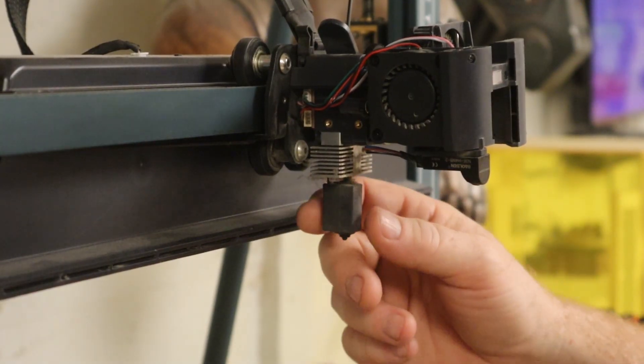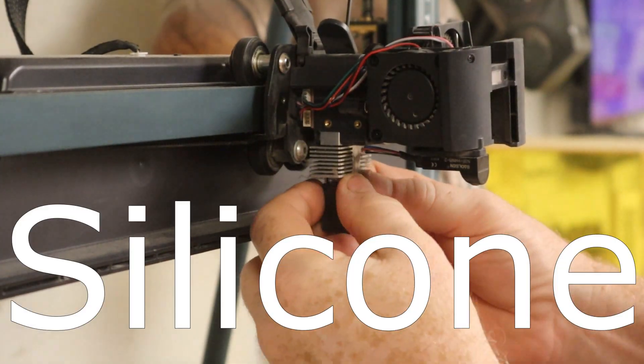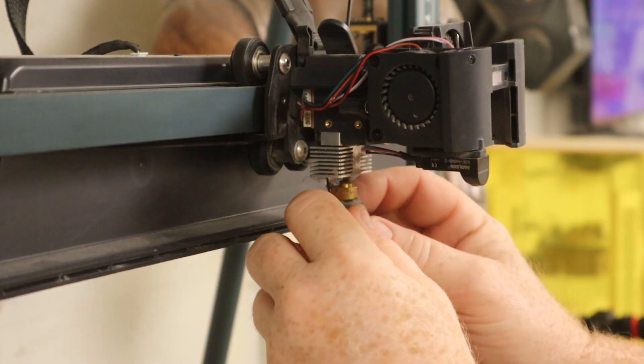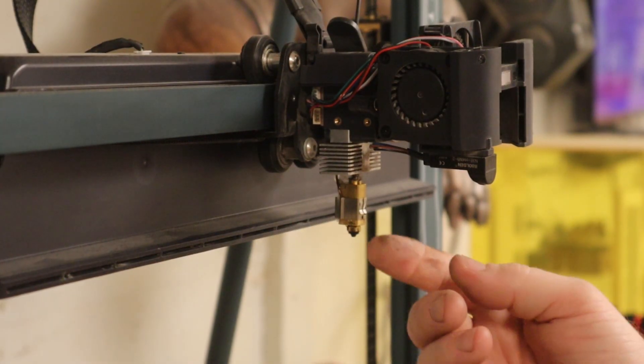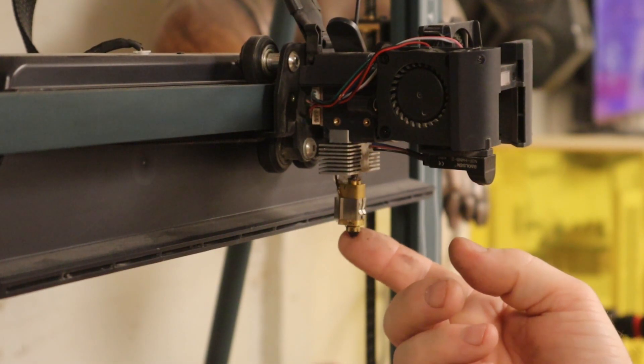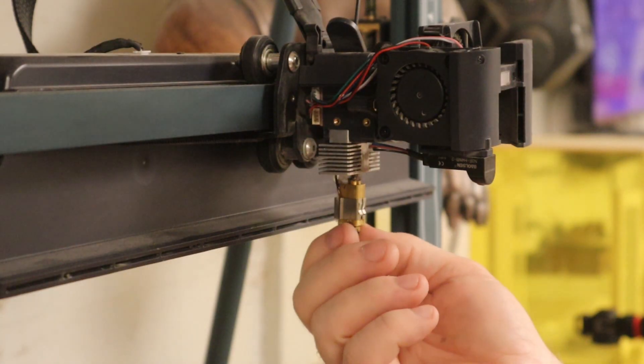So now you got your nozzle down here. There's a rubber boot over it. Take that off. All right, so this is a six millimeter head on here.